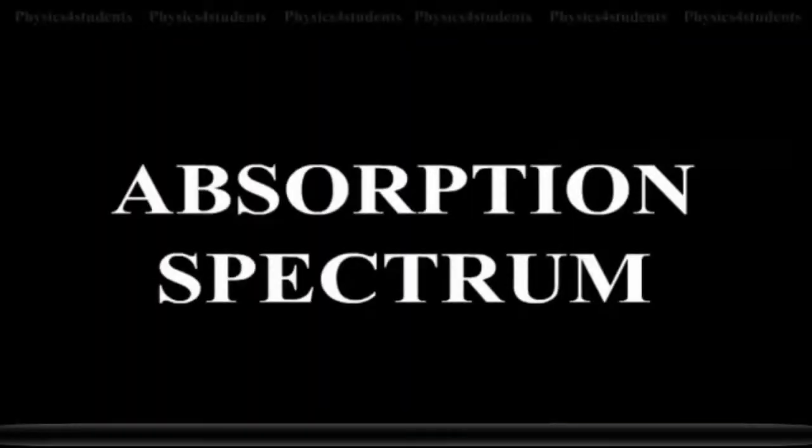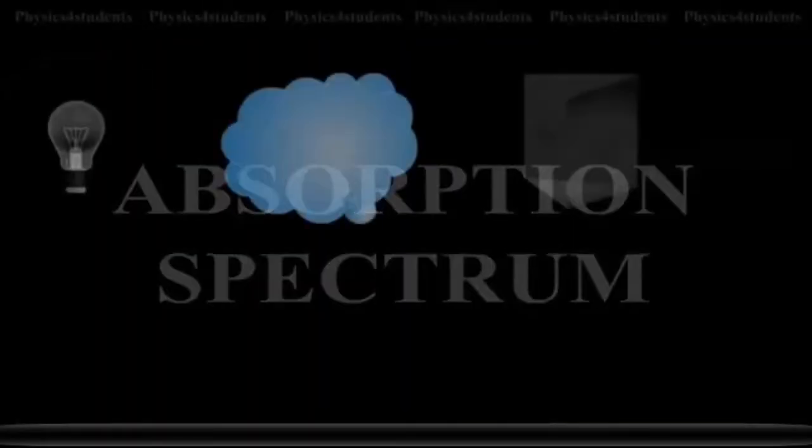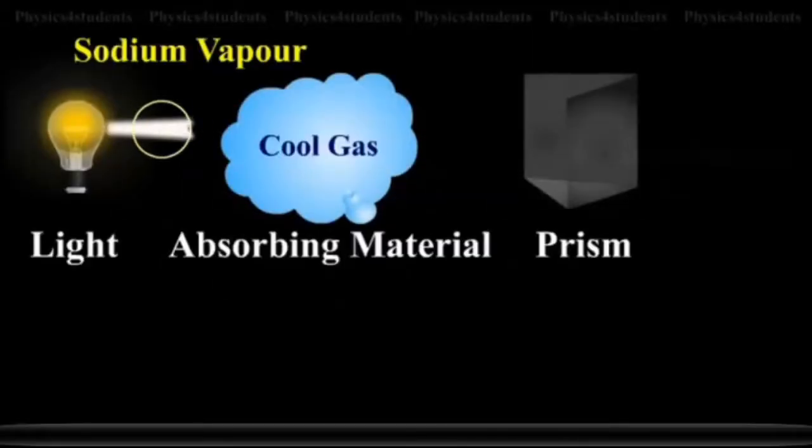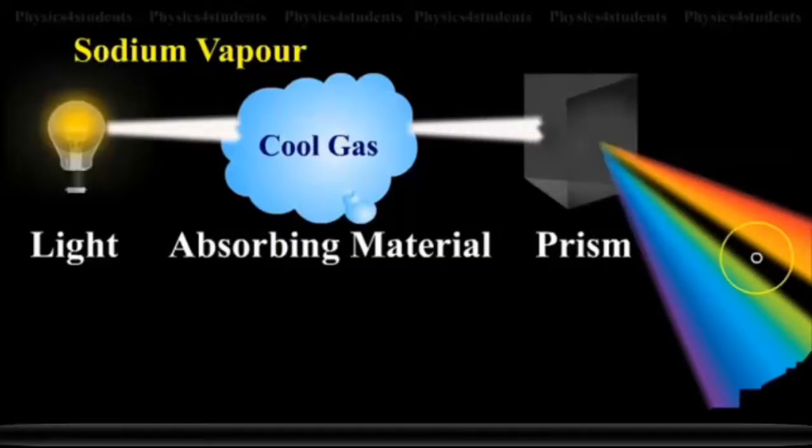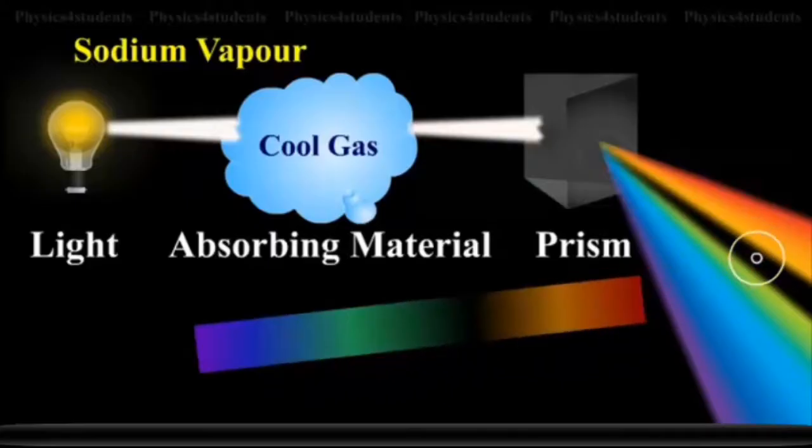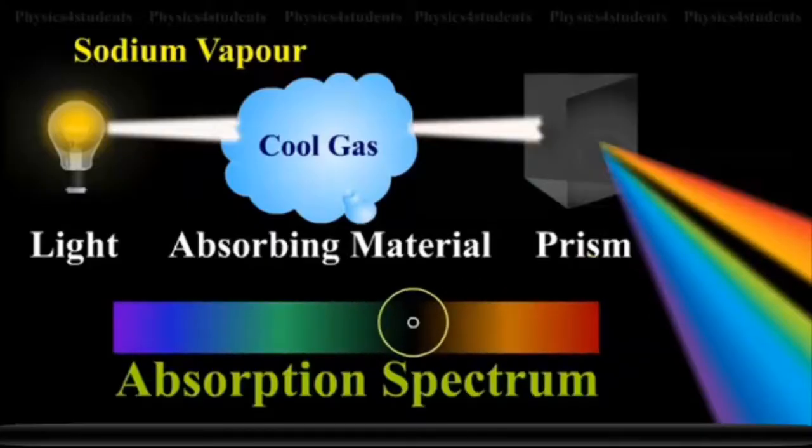Absorption Spectrum. When the light emitted from a source is made to pass through an absorbing material and then examined with a spectrometer, the obtained spectrum is called absorption spectrum. It is the characteristic of the absorbing substance.